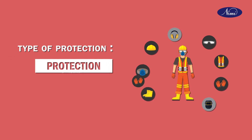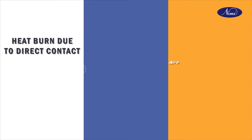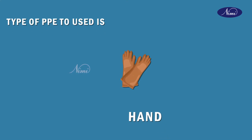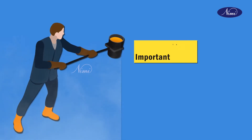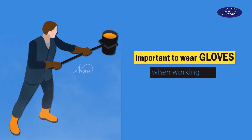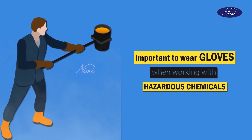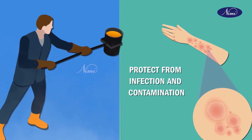The next type of protection is hand protection. The hazards are due to heat burns from direct contact, blows, sparks, moderate heat, or electric shock. The type of PPE to be used is hand gloves. It is important to wear gloves when working with hazardous chemicals and other infectious materials because they protect our hands from infections and contamination.